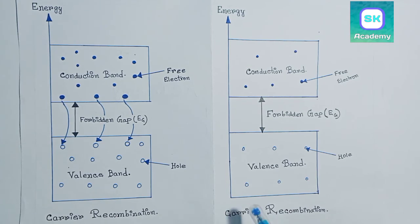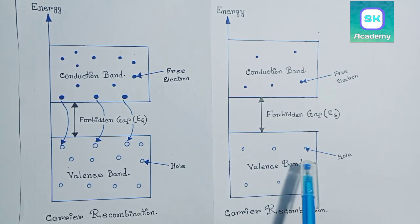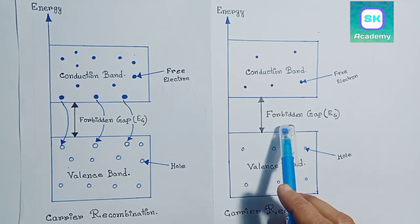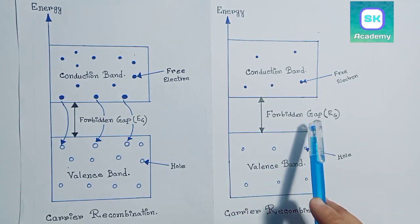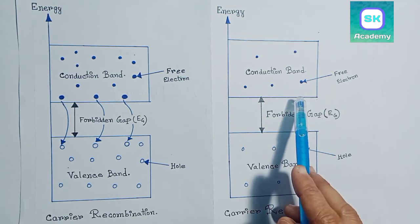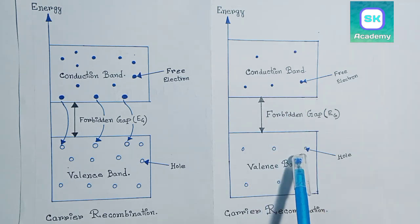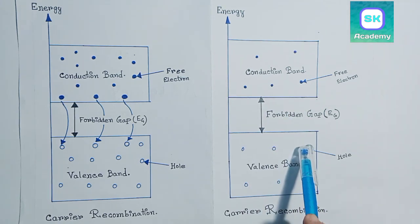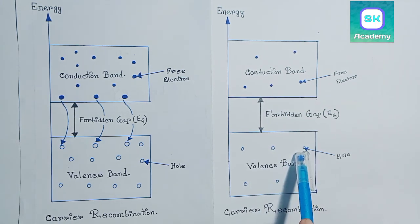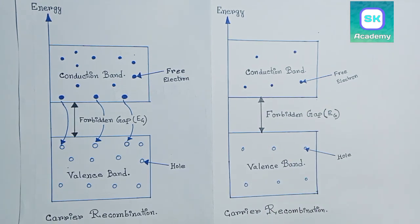So, in carrier recombination, free electron charge carriers, i.e. free electrons and holes, are destructed or eliminated.